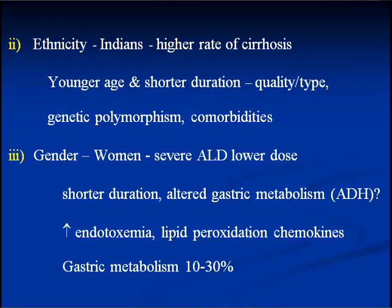Women are more prone to develop liver disease if they drink, and the cirrogenic dose for women was less than 20 grams per day. Anyone drinking more than 20 grams is more likely to develop liver disease. The reason is that alcohol once taken gets metabolized in the gastric mucosa by alcohol dehydrogenase, which is present more in females, so the levels of acetaldehyde are much higher in women. Secondly, endotoxemia happens more often in women because of leaky junctions within the intestinal mucosal membrane.